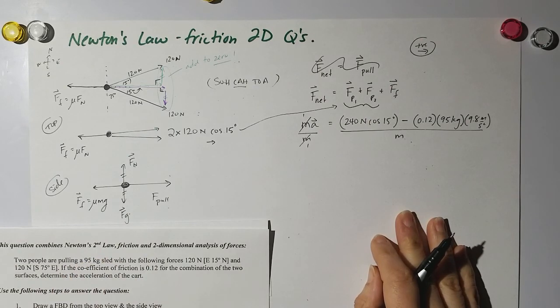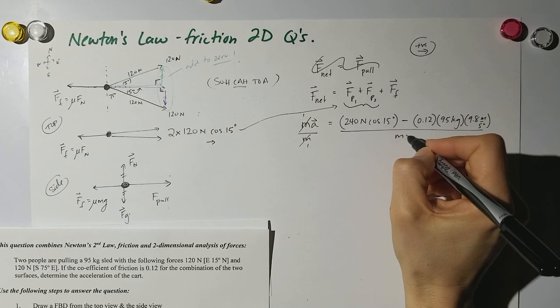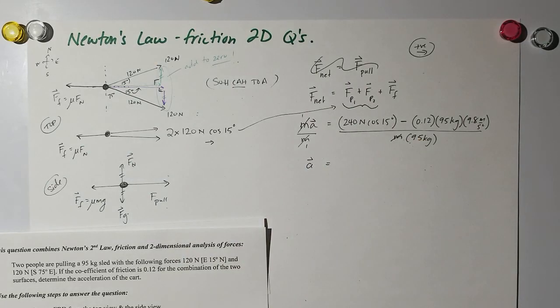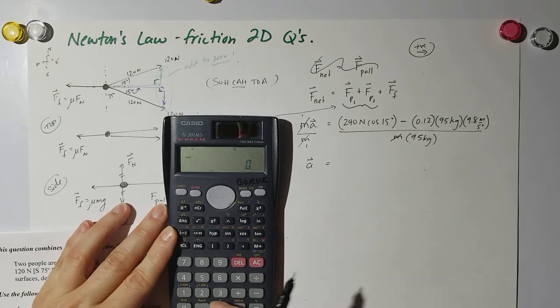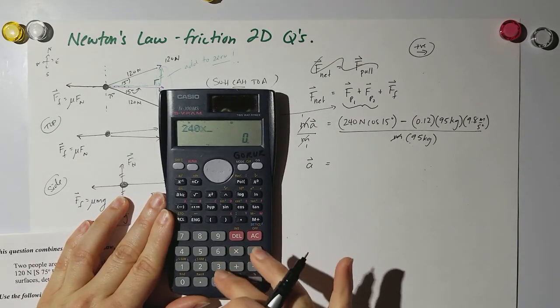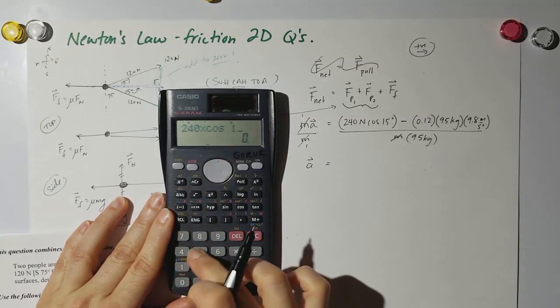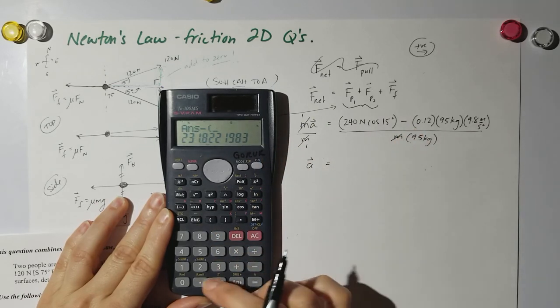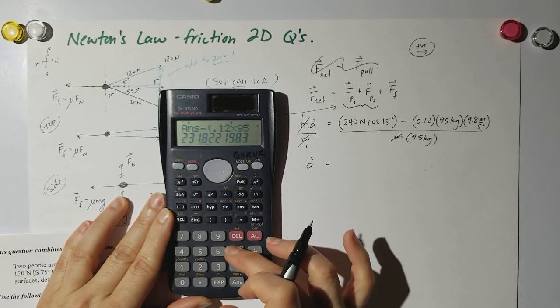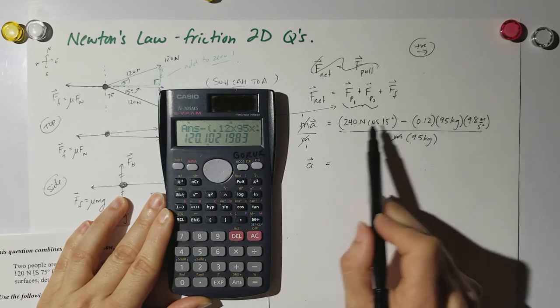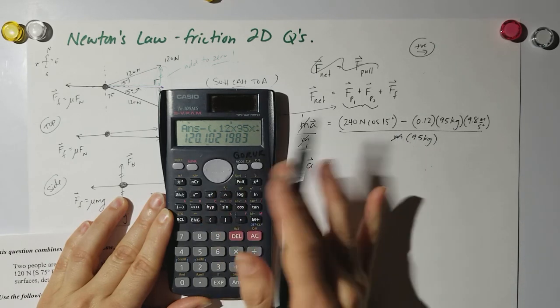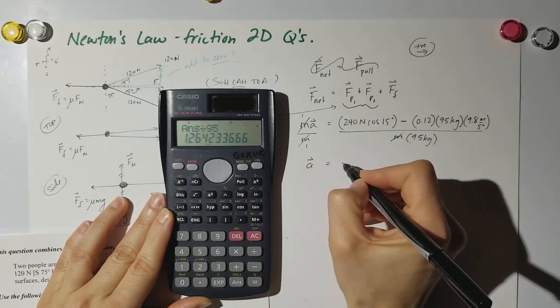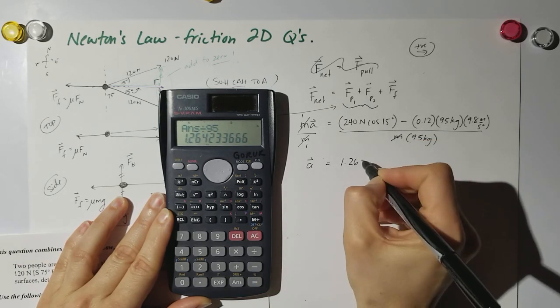Now I'm going to put all this in my calculator. I have 240 times cos of 15, make sure your calculator is in degrees, so that's the force of the pole. Then I'm going to subtract 0.12 times 95 times 9.8, close the brackets. So that right there is my numerator, and I'm going to divide that by 95 kilograms, and I'm going to get 1.264.